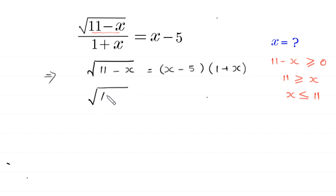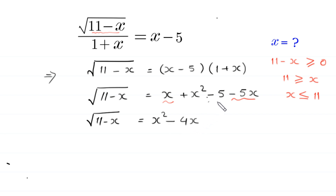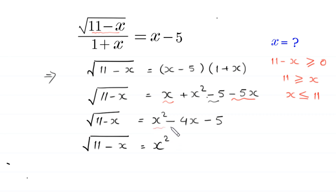Expanding the right-hand side: x times 1 gives x, x times x gives x squared, negative 5 times 1 gives negative 5, and negative 5 times x gives negative 5x. Combining like terms, x minus 5x becomes negative 4x. So the square root of (11 minus x) equals x squared minus 4x minus 5.